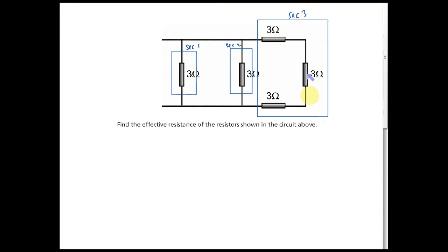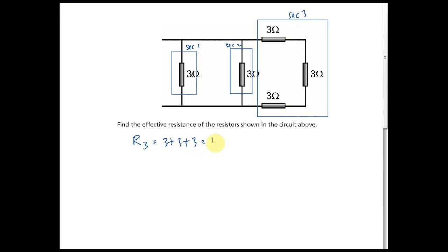Section three contains three resistors. Are they in series or parallel? They are in series. So R3 = 3 + 3 + 3 = 9 ohm.